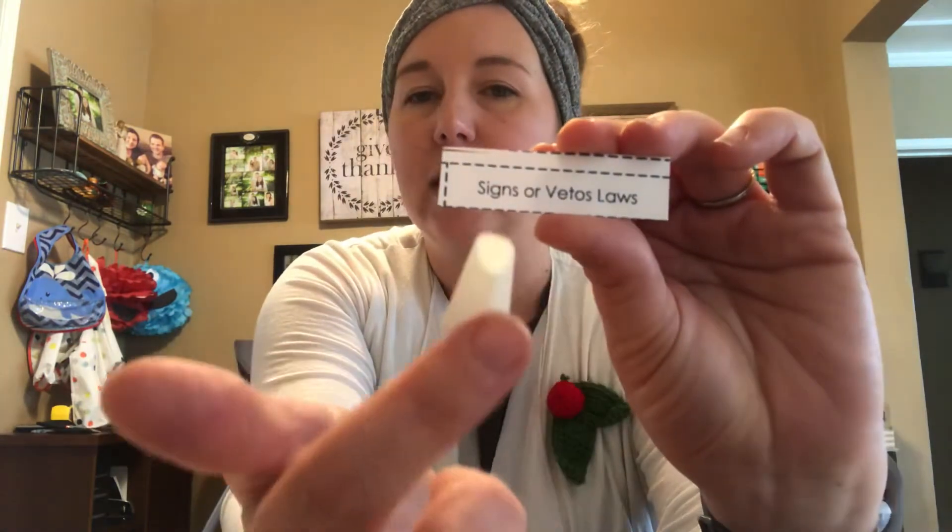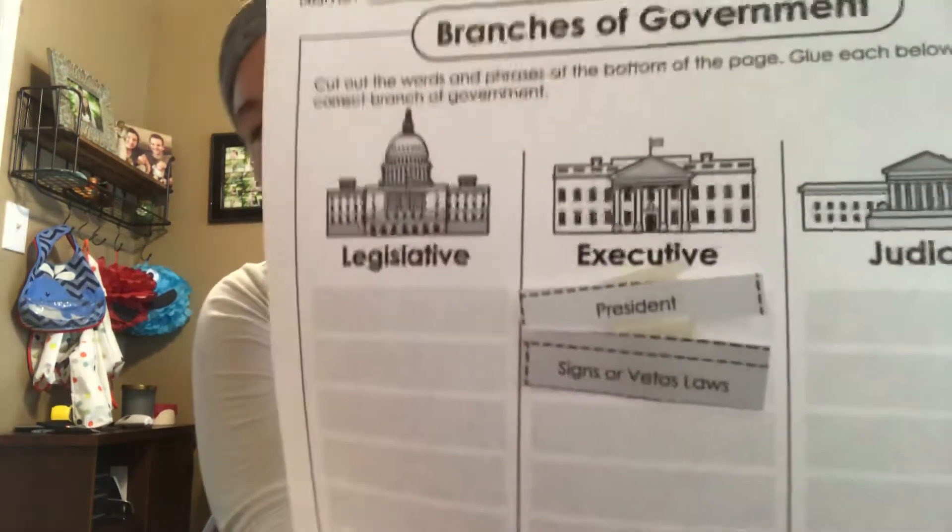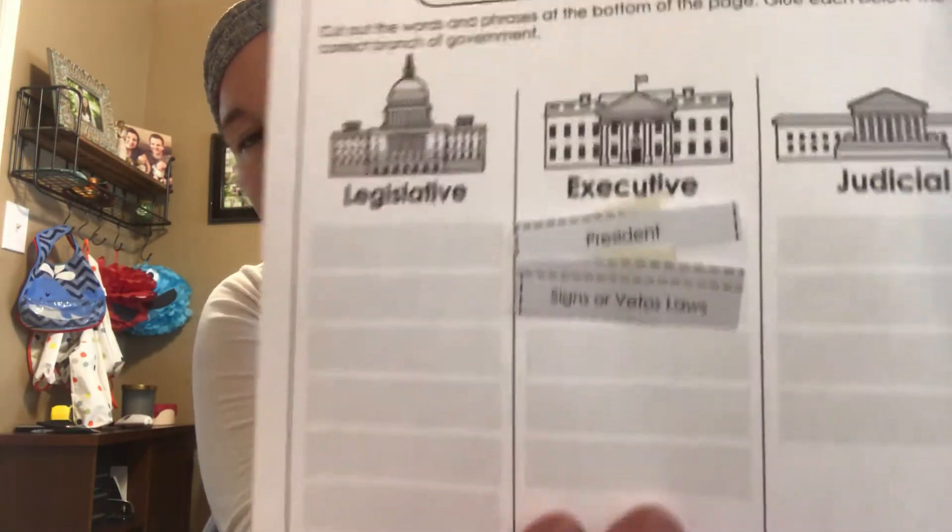What else can the executive branch do? Let's look at 'signs or vetoes laws.' That means when a law comes to their desk, they can choose whether they agree with it or not. They can sign it into law for the whole country, or they can say 'I don't like that, let's go back and fix it' — that's a veto. So if Congress brings a law to the president, the executive branch has the right to say yes or no. That piece goes under the executive branch.